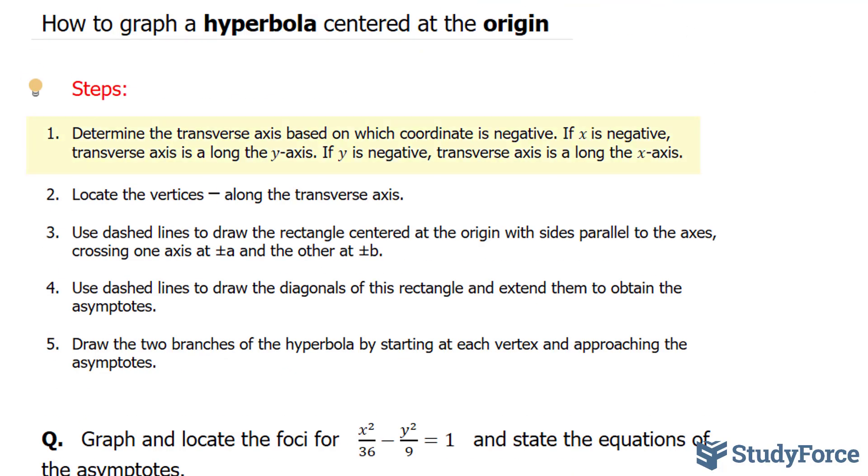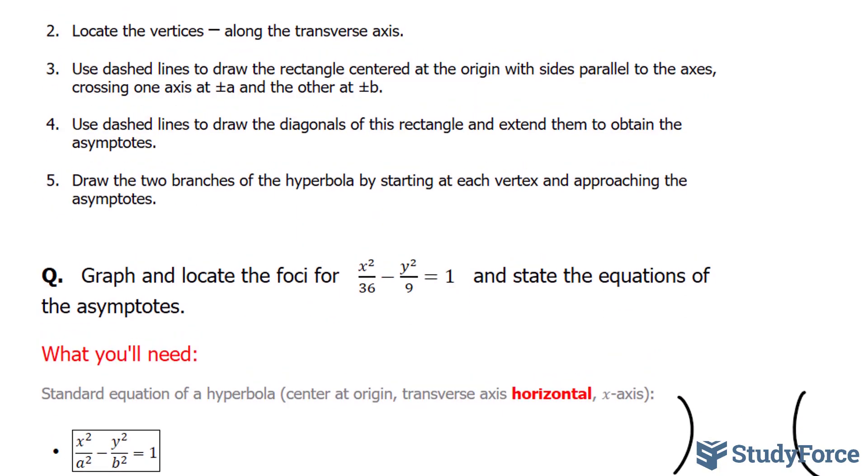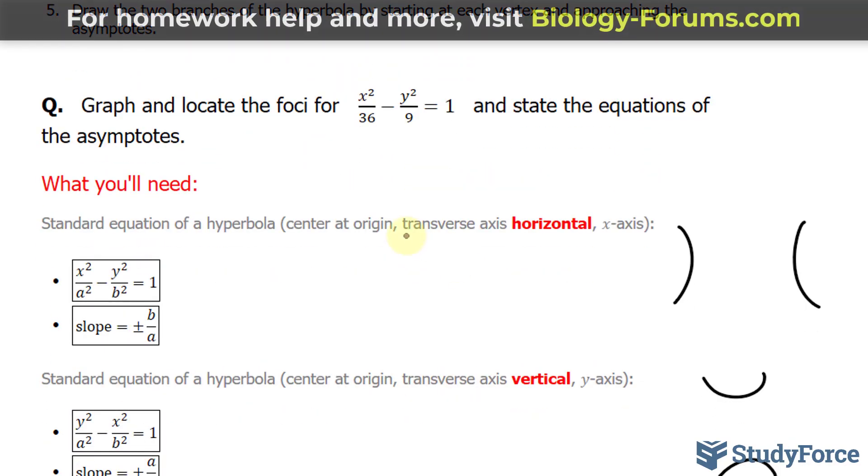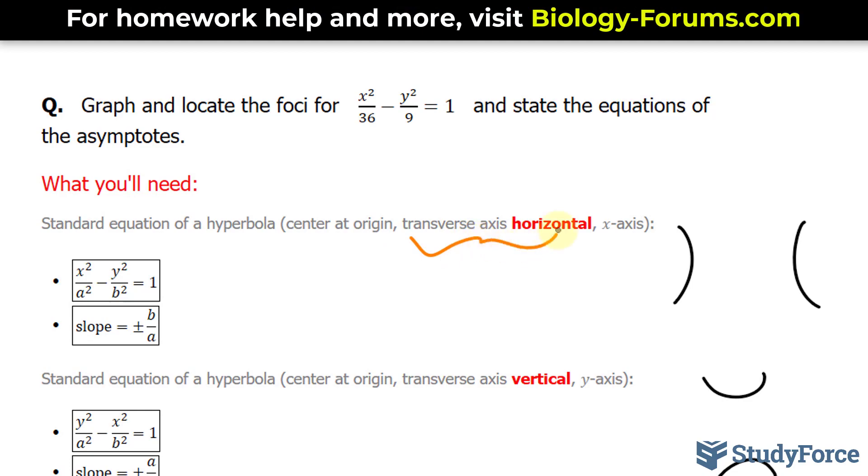So let's go back to the steps. The first step is to determine the transverse axis based on which coordinate is negative. So looking at our equation, it is the y term that's negative. And if the y term is negative, we have a transverse axis that is horizontal. So expect something that looks like this.